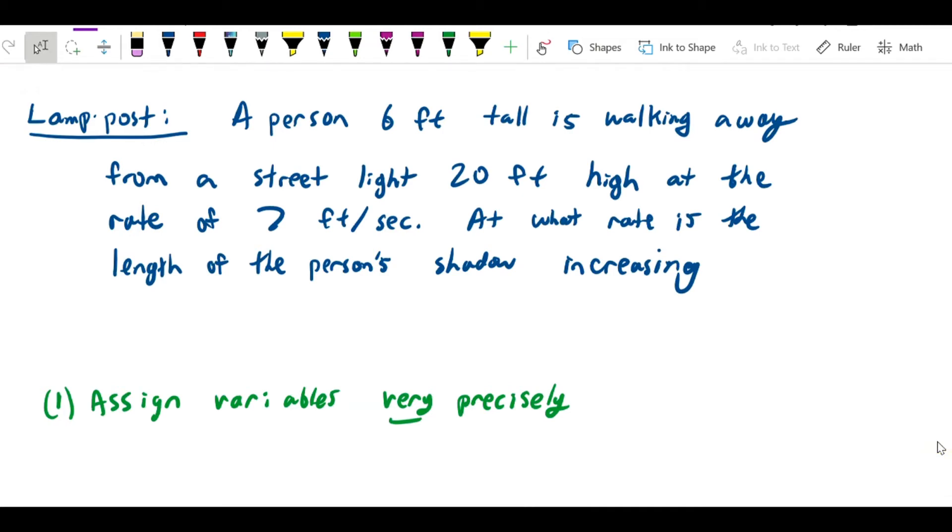Another type of related rates problem is the lamppost problem. In this problem we have a 6 foot tall person walking away from a streetlight that's 20 feet high at the rate of 7 feet per second. At what rate is the length of the person's shadow increasing?